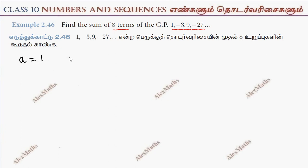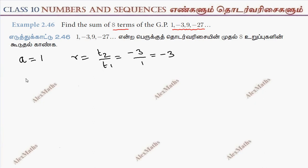In this series, the first term A is 1. The common ratio R is the second term divided by the first term, which is minus 3 by 1, so R equals minus 3.